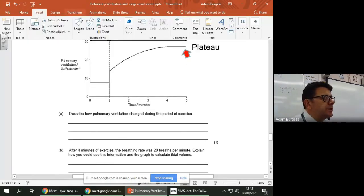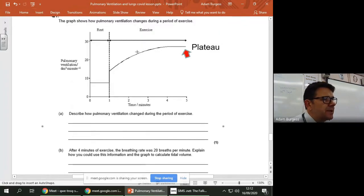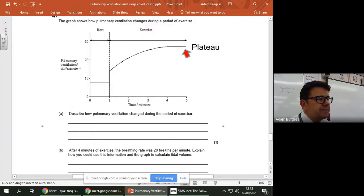Okay, so what you would do, all right, is this. So the first, it says after four minutes, the breathing rate was 20 breaths per minute, so we know the breaths. Okay, the other thing we know at this point here is the pulmonary ventilation.